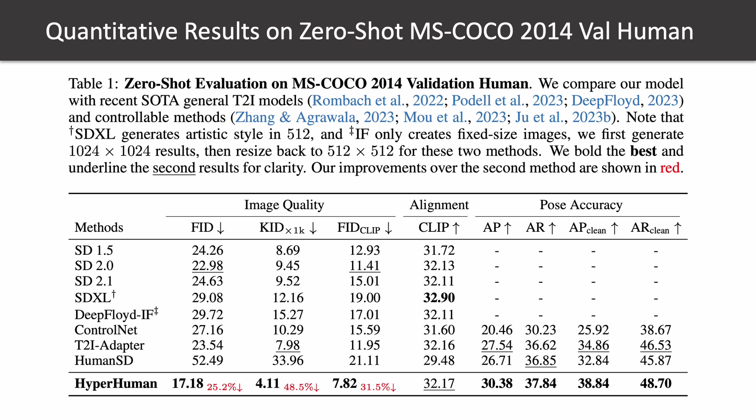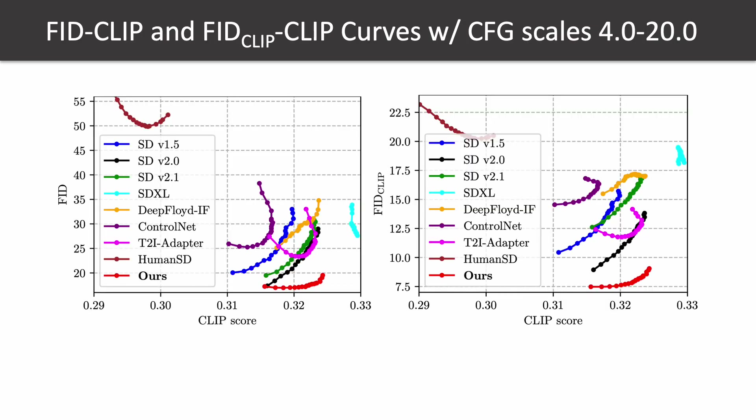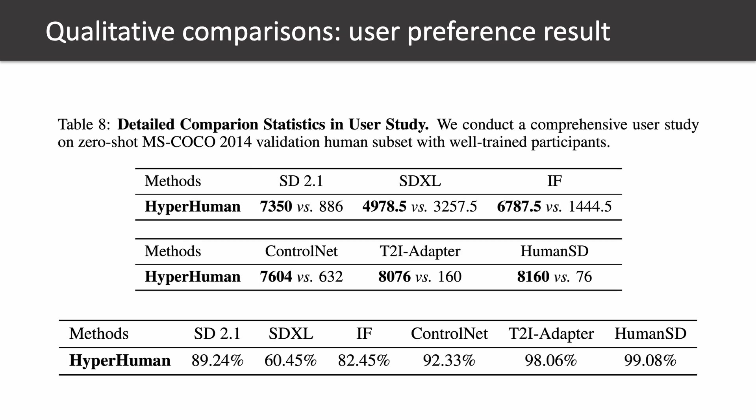We evaluate on the MS-COCO 2014 validation human subset and achieve the best results on image quality and pose-accuracy metrics, ranking second on CLIP score. Note that SDXL uses two text encoders with three times larger units and more cross-attention layers, leading to superior text-image alignment. In spite of this, we still obtain an on-par CLIP score and surpass all other baselines with similar text encoder parameters. We also show FID-vs-CLIP curves over multiple classifier-free guidance scales, where our model balances well between image quality and text alignment, especially for commonly used guidance scales. A comprehensive user study further confirms that users prefer Hyperhuman to general and controllable T2I models.